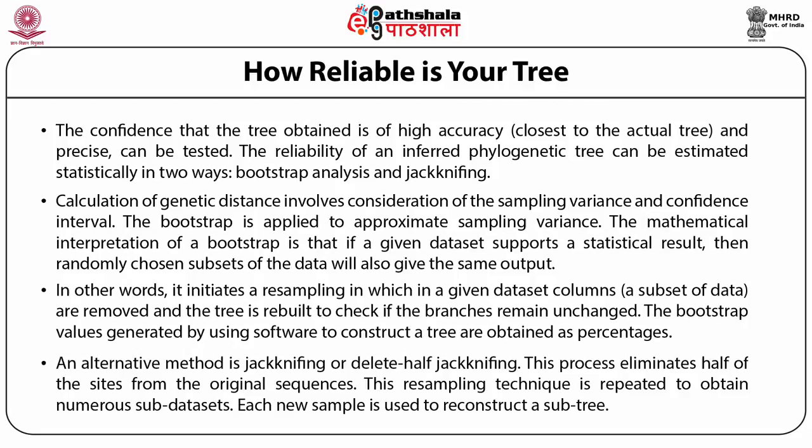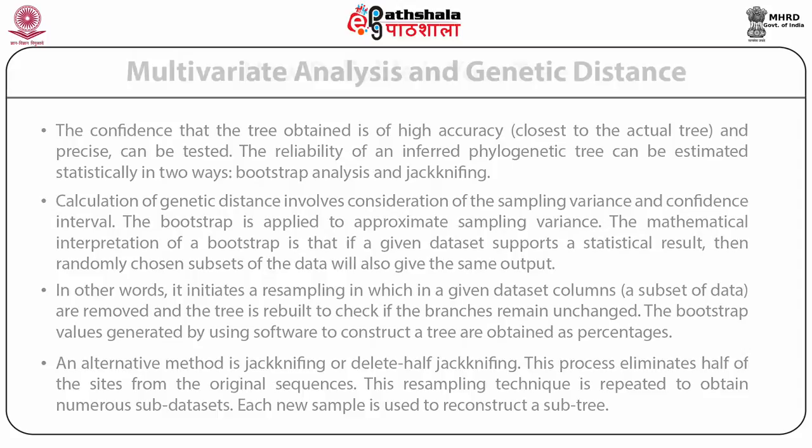An alternative method is jackknifing, or delete-half jackknifing. This process eliminates half of the sites from the original sequences. The resampling technique is repeated to obtain numerous sub-datasets, and each new sample is used to reconstruct a subtree. The frequency of each subtree is calculated. A 100% jackknifing value implies that the subtree was obtained in all of the trees reconstructed.